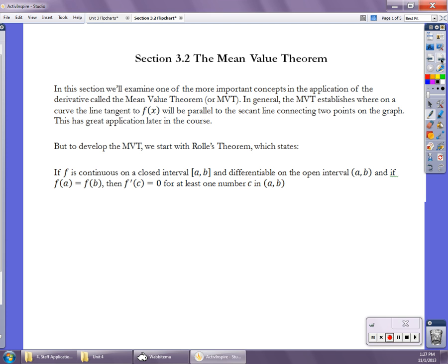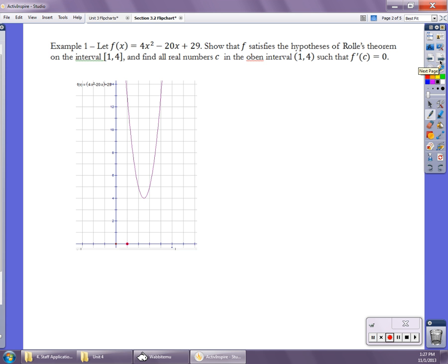Let's take a look at an example of Rolle's theorem. In my first example, I'm going to explore f(x) = 4x² - 20x + 29 on the interval from 1 to 4. If I evaluate f(1), I get 13. If I evaluate f(4), I also get 13. Those are the points right here.